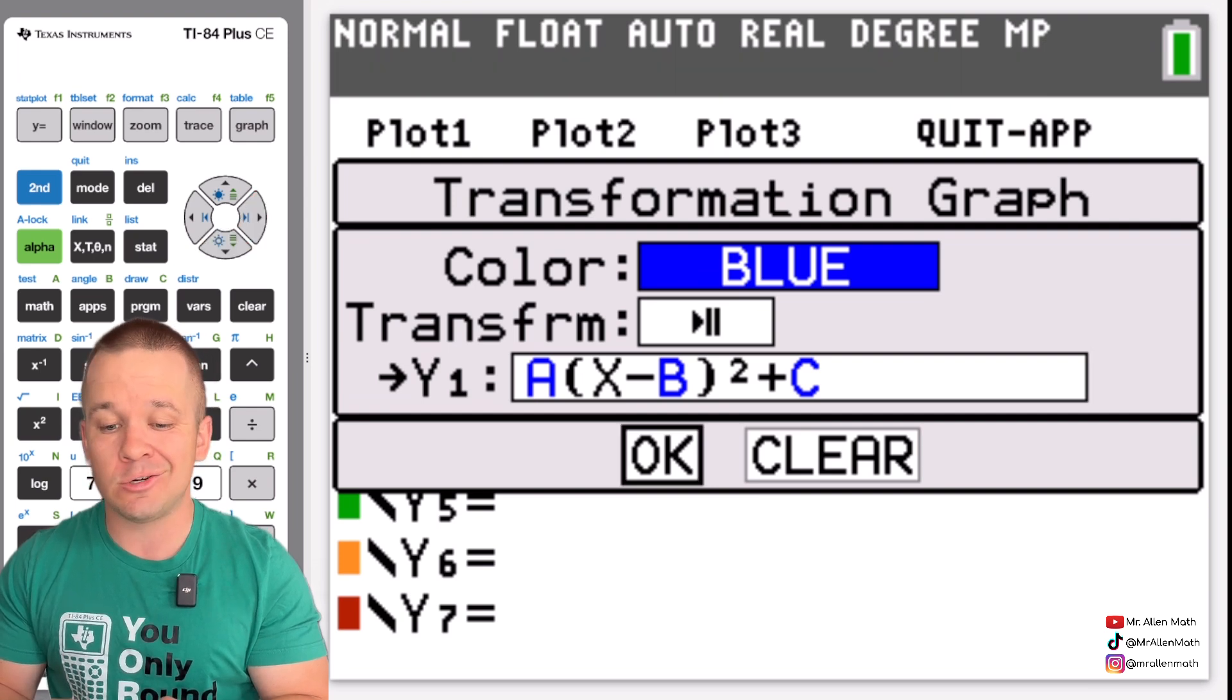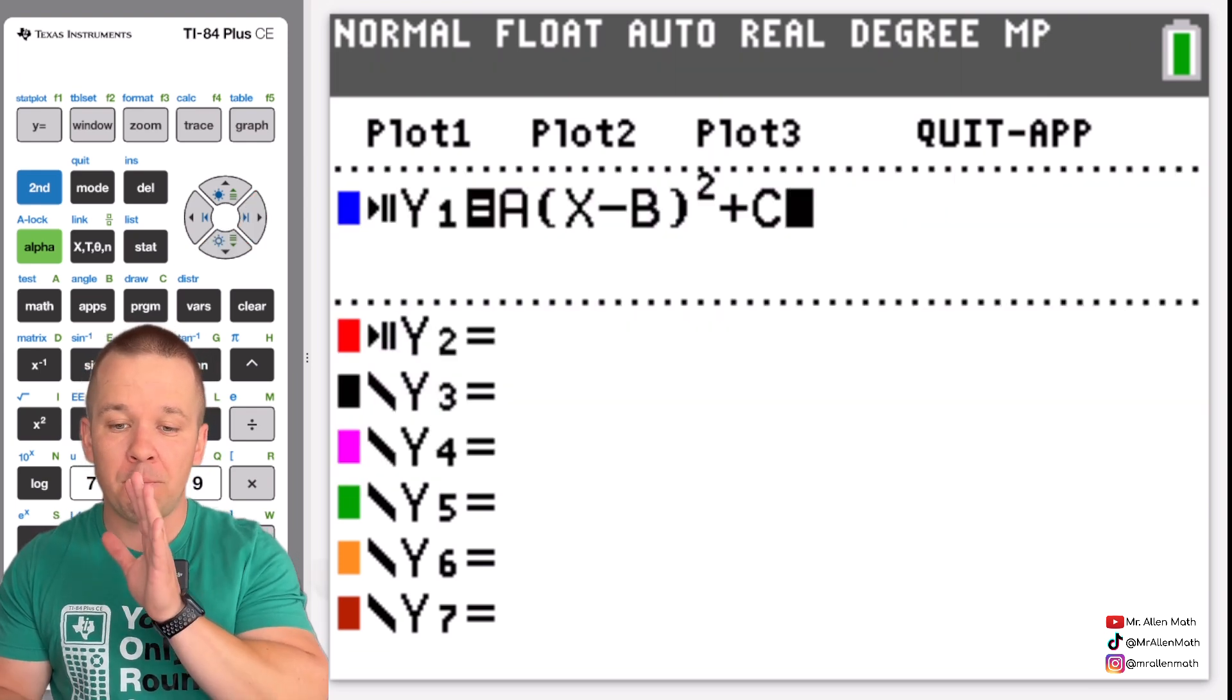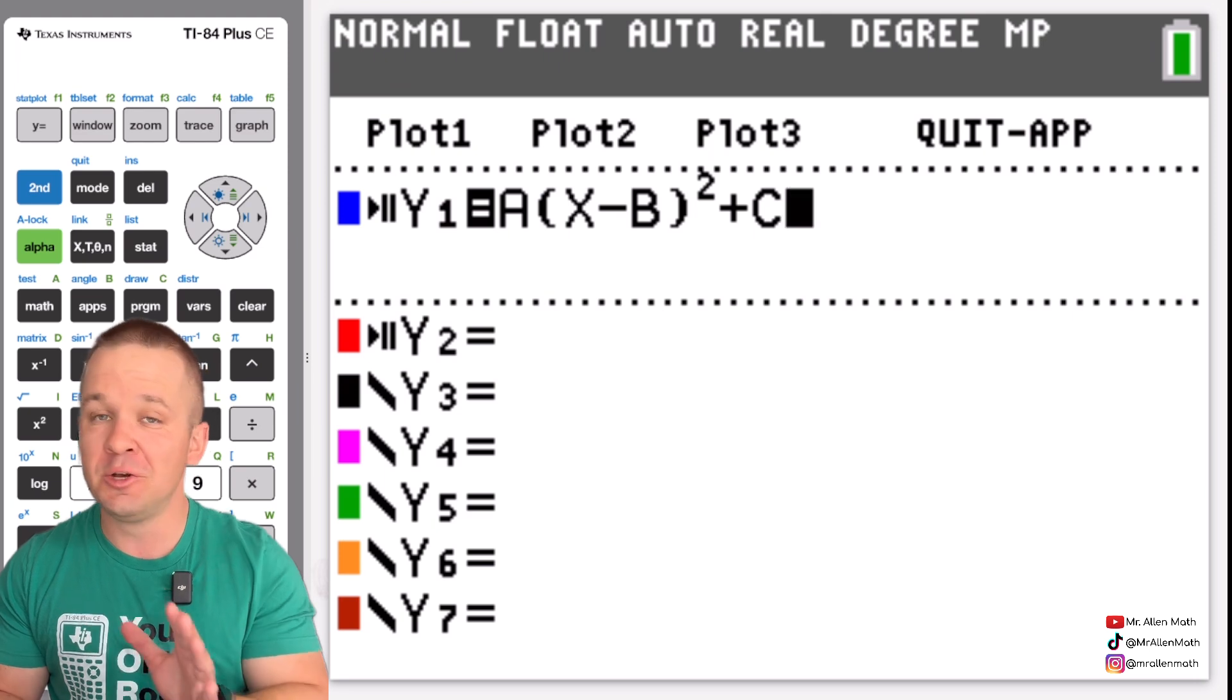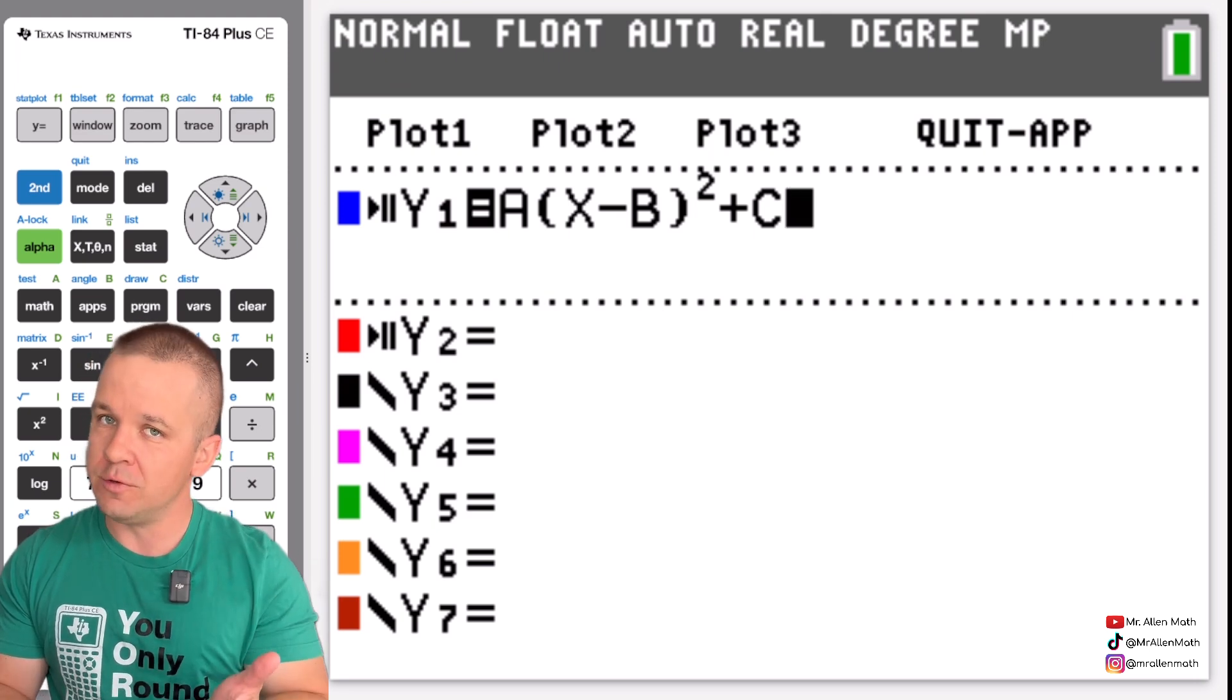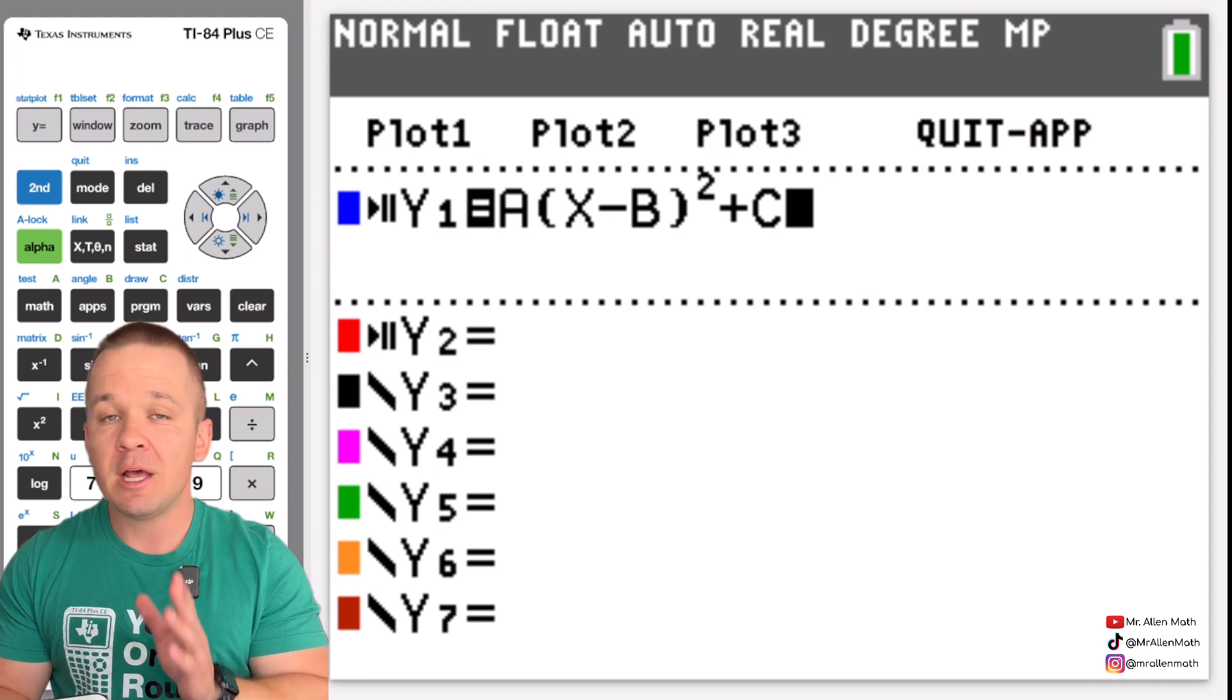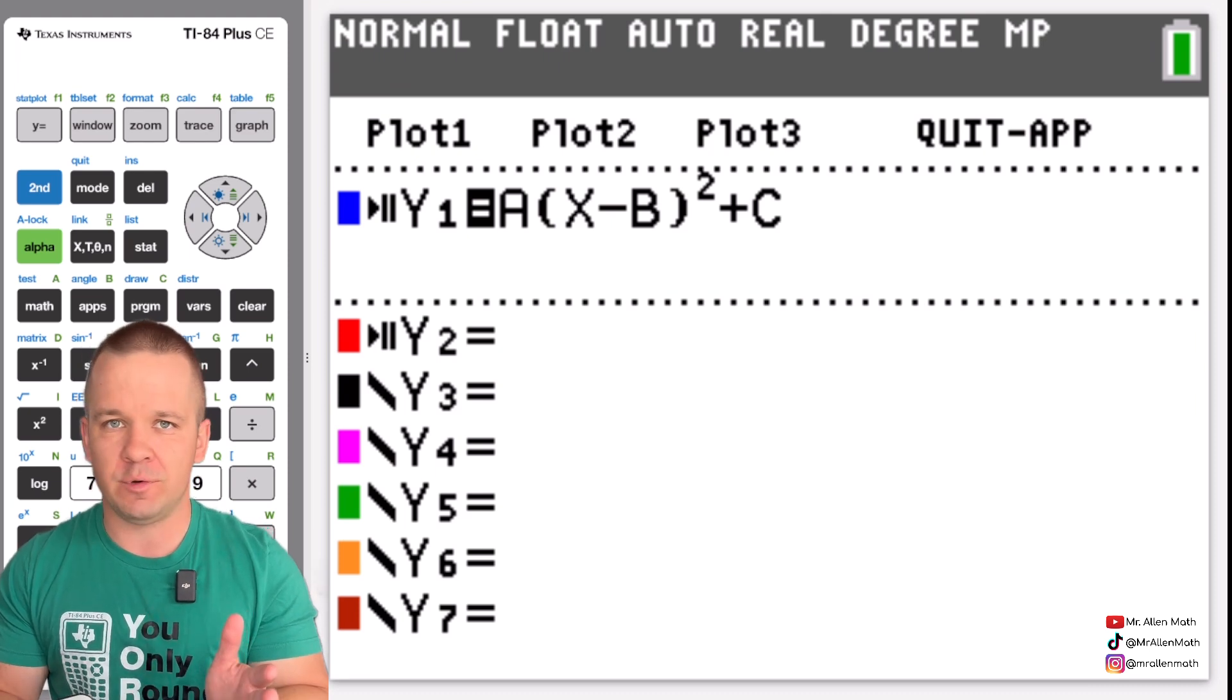And I'm going to arrow down. Hit enter on OK. And now it puts this in here. So that's super awesome. You could type these in. Again you could type them in or use those preloaded ones. All right. So next thing here is I'm just going to hit graph and we'll see where we're at.